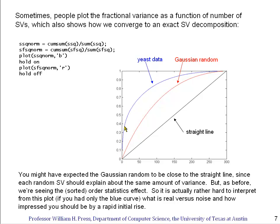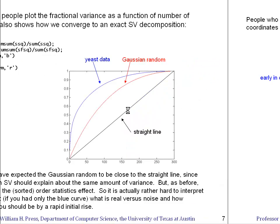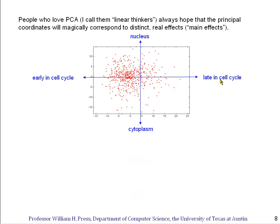But we're seeing the order statistics effect - we've intentionally sorted them so that the biggest, in this case biggest by chance, comes first. So if you only saw the red curve here, you might say there must be signal because I can explain half the variance with only about 60 of my singular vectors out of 300. But that's just an illusion. Now, in the actual yeast data, we get a much steeper curve, and that's not an illusion. There really are important principal components in that yeast gene expression data. We're explaining half the variance with something like 15 singular values.